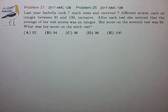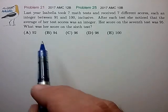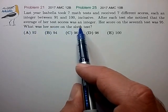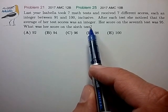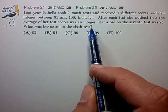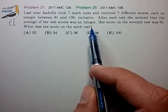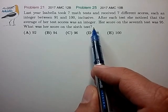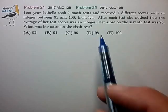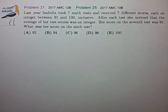This looks pretty difficult. I key in on the condition that the average of her test scores was an integer, because that tells me the sum of the first five scores is a multiple of five, the sum of the first six scores is a multiple of six, and the sum of all seven scores is a multiple of seven. That's the kind of condition I can use modular arithmetic to attack.